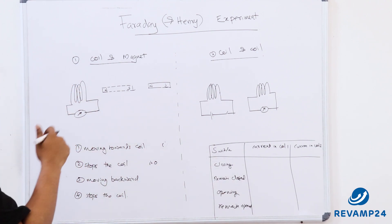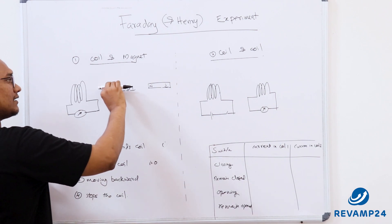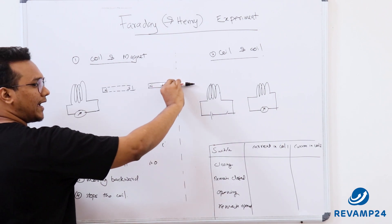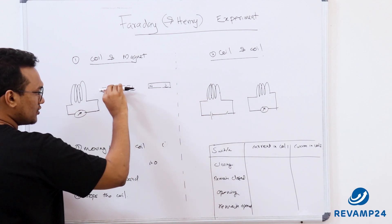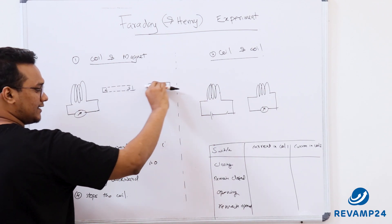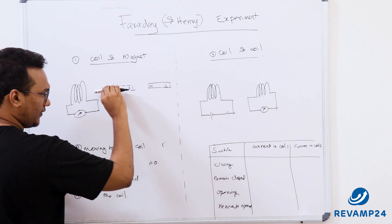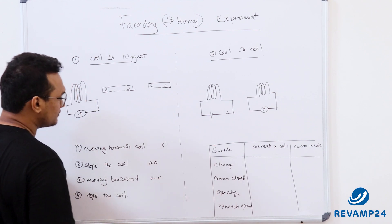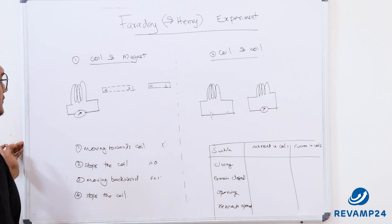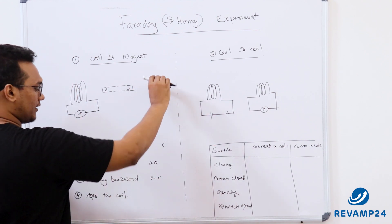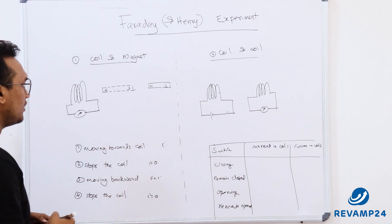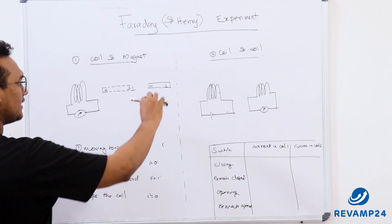He then moved the magnet backward to its initial position, away from the coil. In that condition, with the magnet moving away, he again measured a deflection. When he stopped the magnet, the current returned to zero.